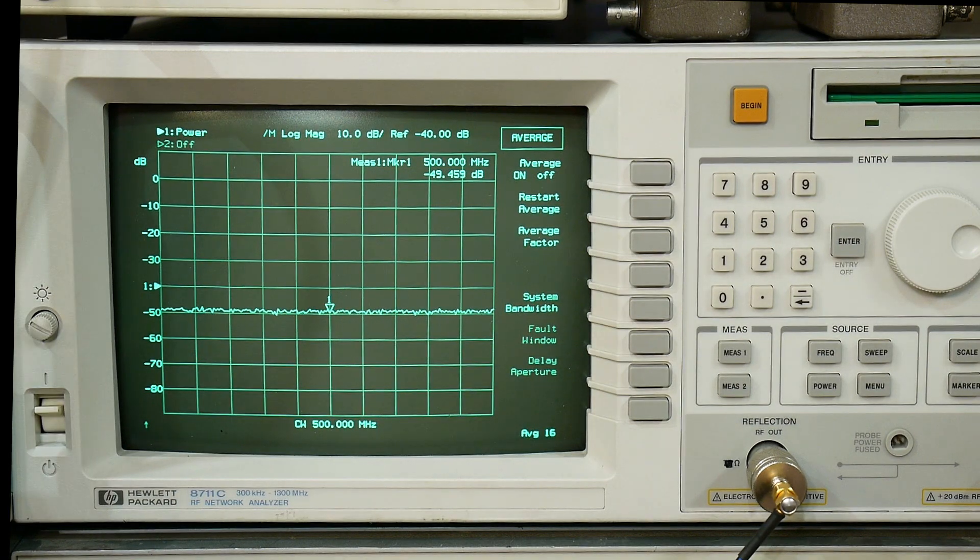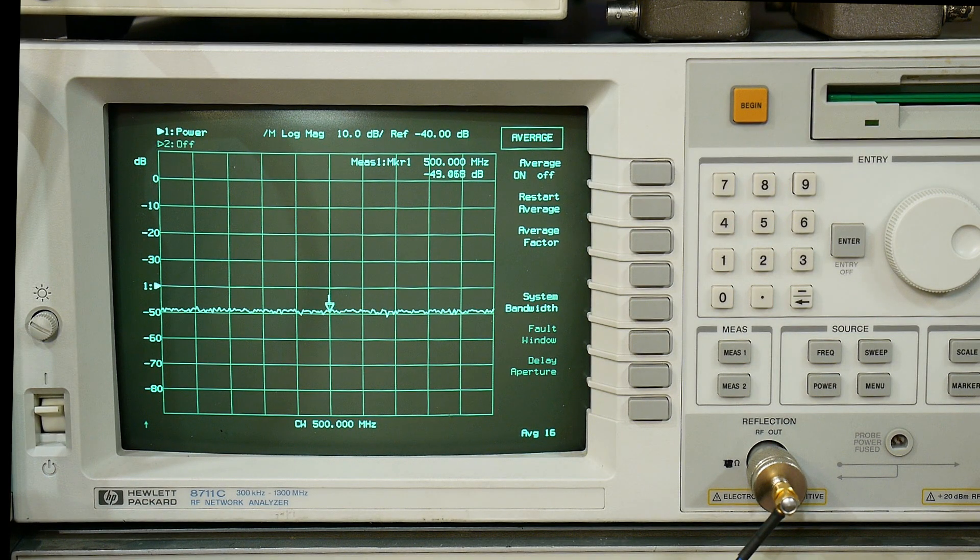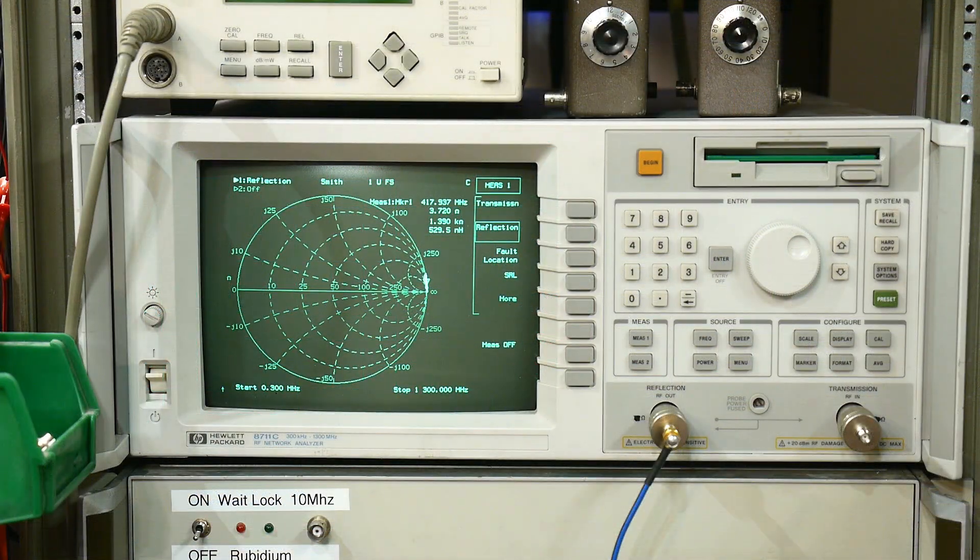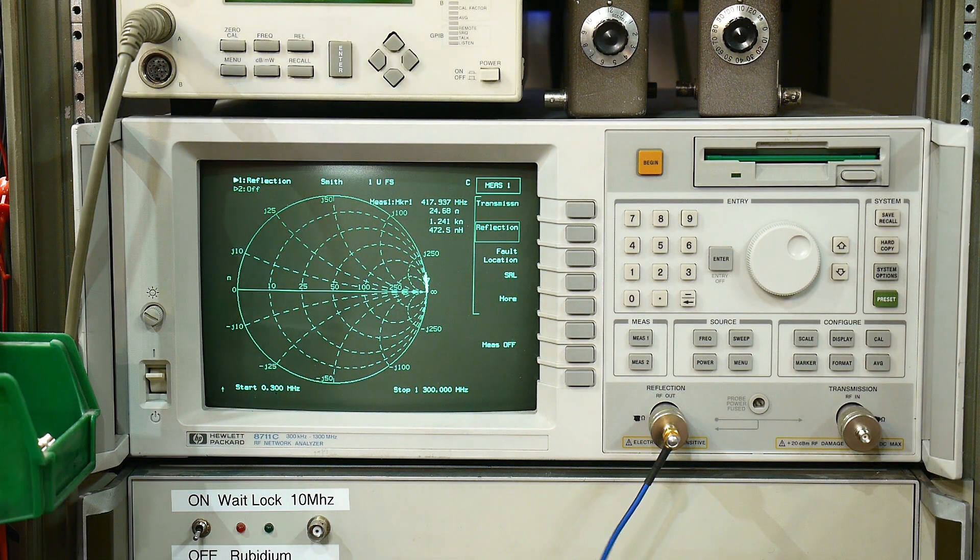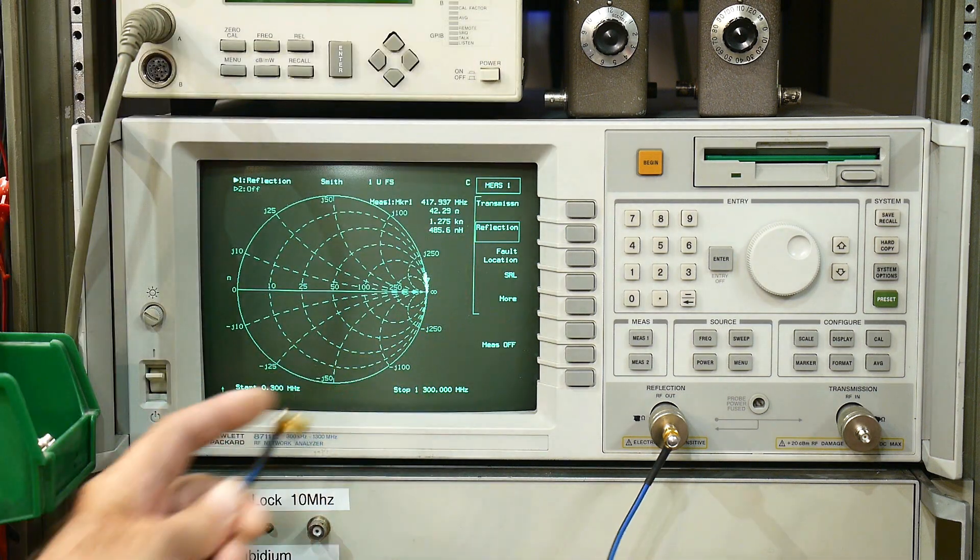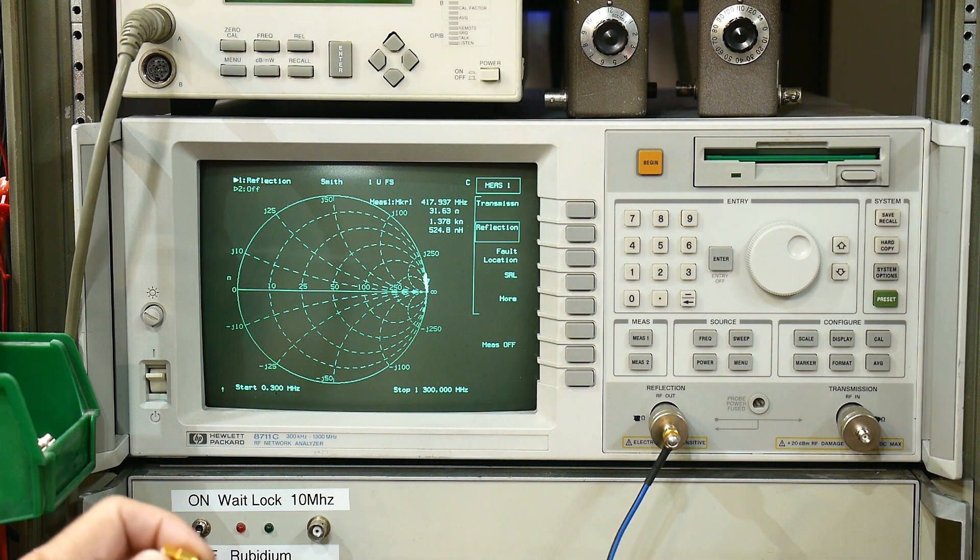So it's outputting fine. It's measuring fine. Frequency's fine. Yeah, it seems fine. All right. I see, we can do another test here. I'm going to calibrate the VNA at the end of this testing cable here. And so let's do that.